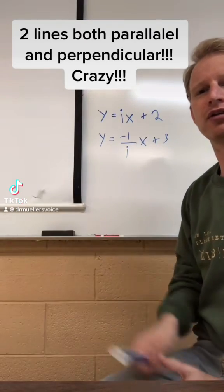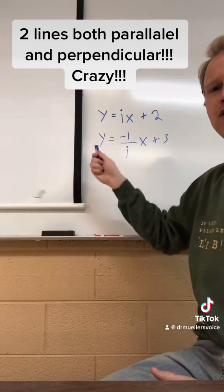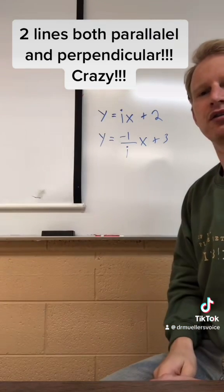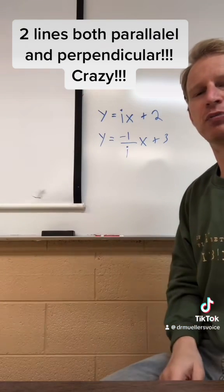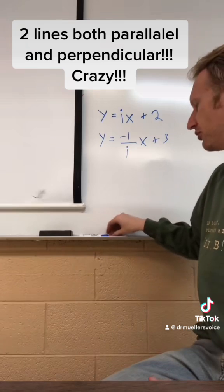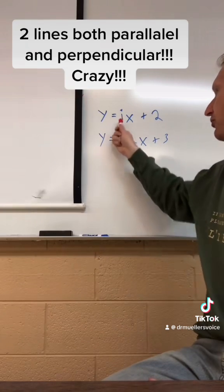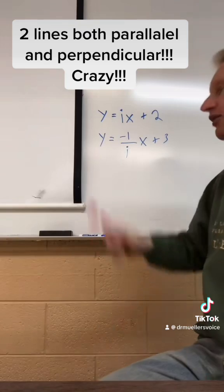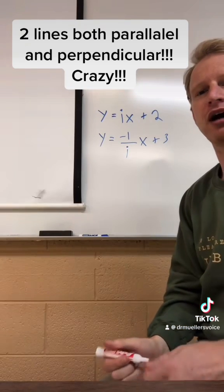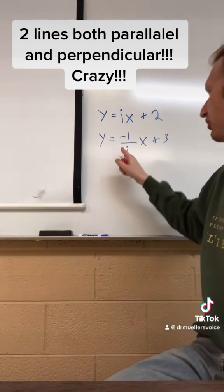In the field of imaginary numbers, these two lines would be perpendicular, right? Slopes that are opposite reciprocals are perpendicular, so i and negative 1 over i are opposite reciprocals. But notice something here.